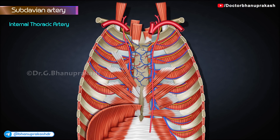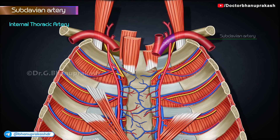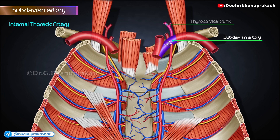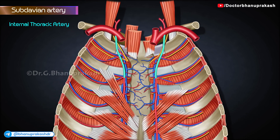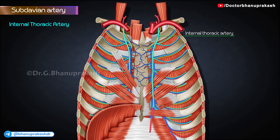Internal thoracic artery. The internal thoracic artery originates from the inferior aspect of the first part of the subclavian artery, opposite the origin of the thyrocervical trunk. The origin lies near the medial border of the scalenus anterior. The artery runs downwards and medially in front of the cervical pleura, then enters the thorax by passing behind the first costal cartilage. It runs till the sixth intercostal space where it ends by dividing into the superior epigastric and musculophrenic arteries.